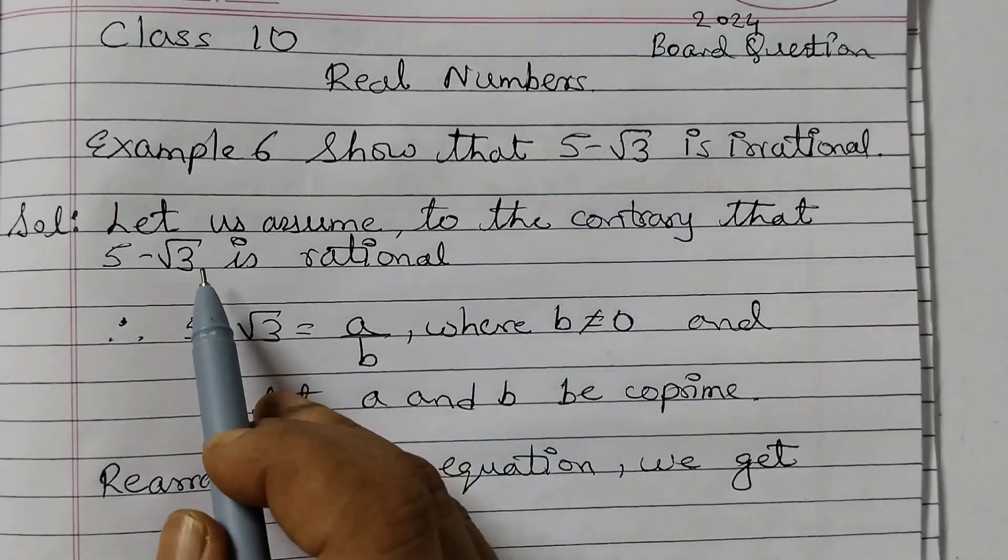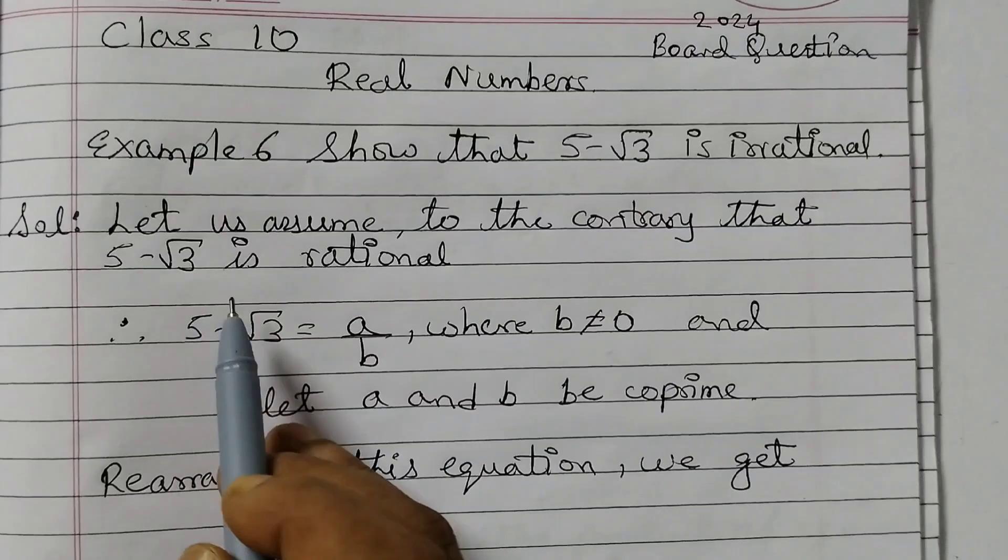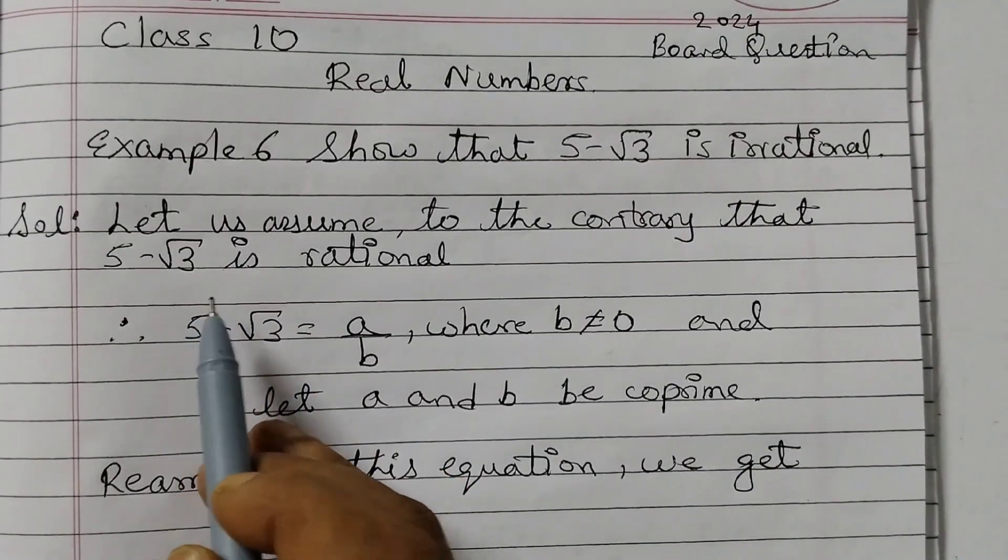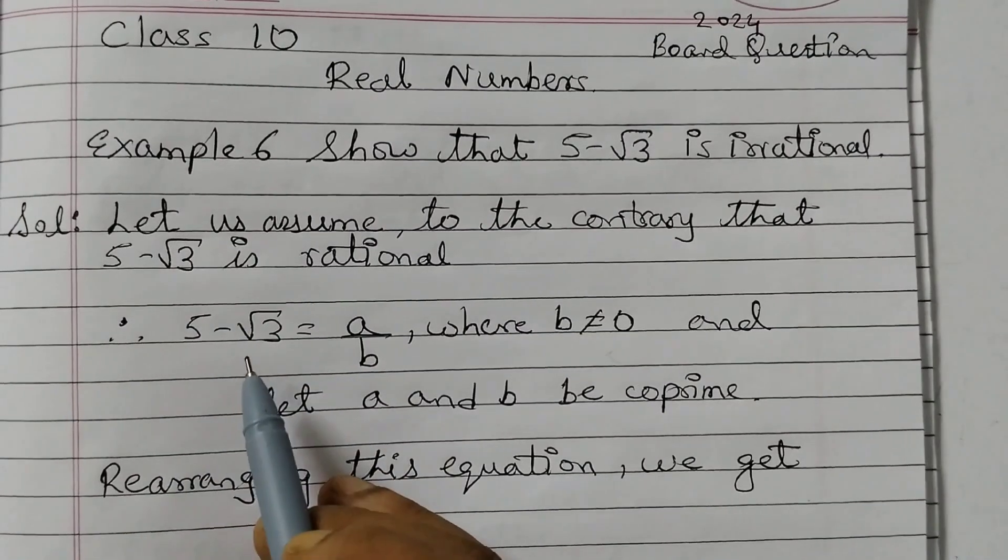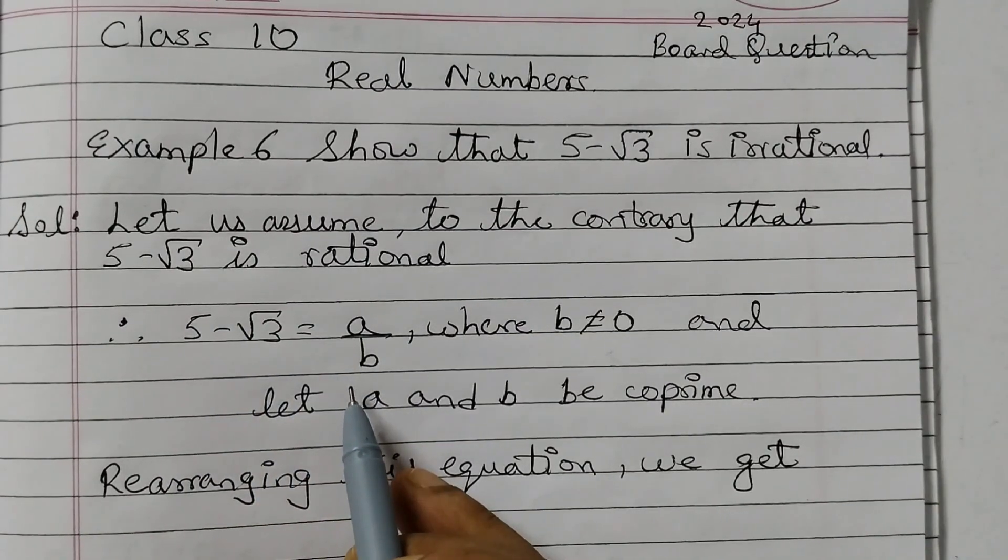So we start with the assumption that, let us assume to the contrary that 5 minus root 3 is rational. We will assume that this is not irrational, this is rational. Therefore, 5 minus root 3 is equal to A upon B because any rational number we can write it in the form of P upon Q.